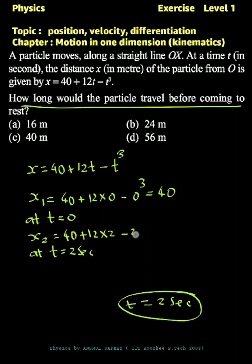It will be equal to 40 plus 12 times 2 minus 2 cubed. It will be equal to 40 plus 24 minus 8, or 40 plus 16. For these two seconds, the displacement and distance both are equal in magnitude.